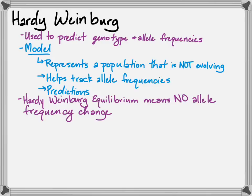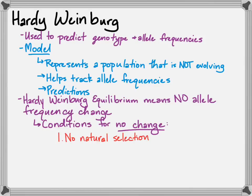We're going to discuss the five conditions in more detail later, though you'll see some familiar things on the list. The first condition for Hardy-Weinberg equilibrium — meaning no change in allele frequencies — is no natural selection. That means every genotype survives equally, so the frequencies don't change.